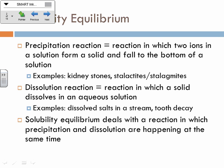Just a reminder on a precipitation reaction — that's where you've got your ions combining, they form a solid, and they fall to the bottom of a solution. Examples include kidney stones and stalactites and stalagmites. The dissolution reaction is the opposite: you've got a solid dissolving. When you've got a solubility equilibrium, you've got both of those happening at the same time.